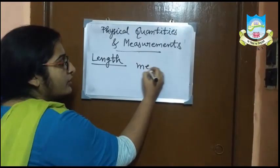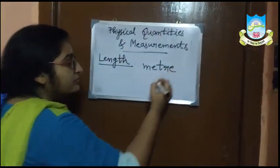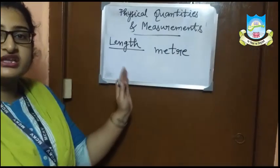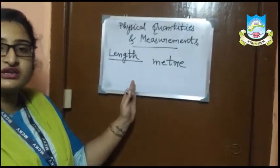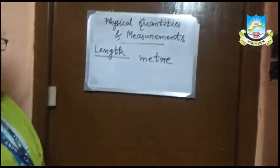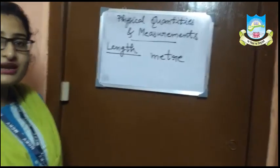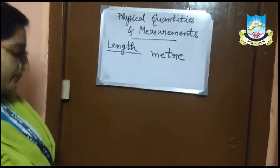The multiples of meter are kilometer, hectometer, etc. And the submultiples are centimeter, millimeter, etc.